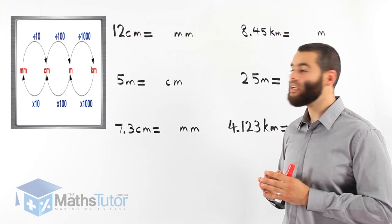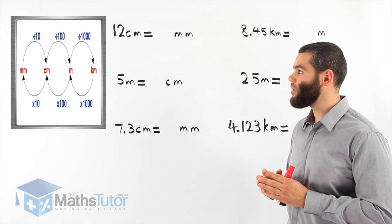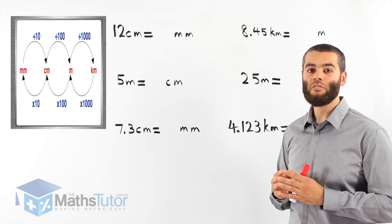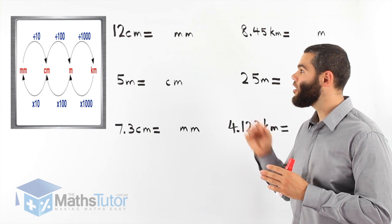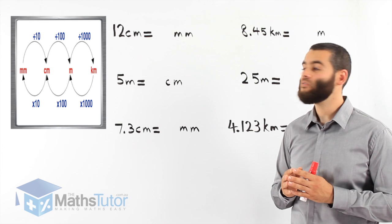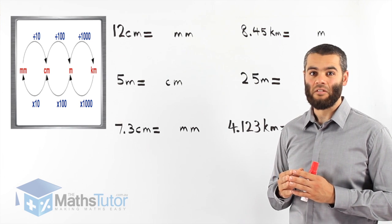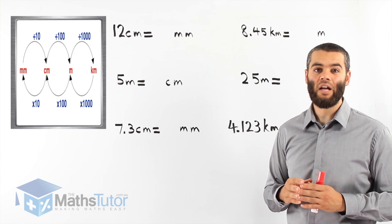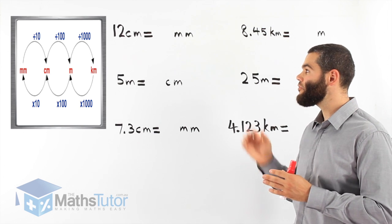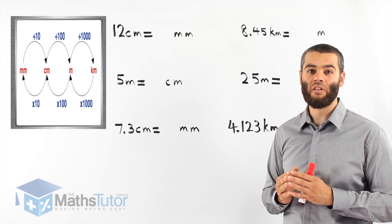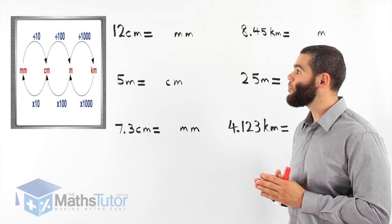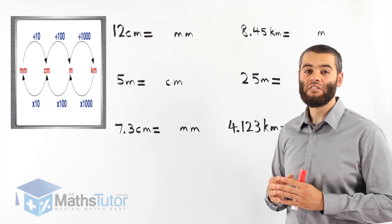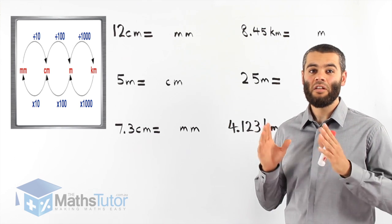If we are going from millimetres to centimetres, we divide by 10. When we go from centimetres to metres, we divide by 100. And when we go from metres to kilometres, we divide by 1,000. Going back, it's the opposite. The opposite of divide is times, so going from kilometres to metres is times 1,000, from metres to centimetres times 100, and from centimetres to millimetres times 10.